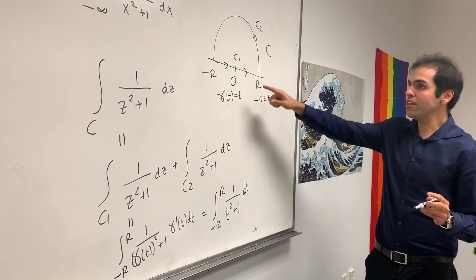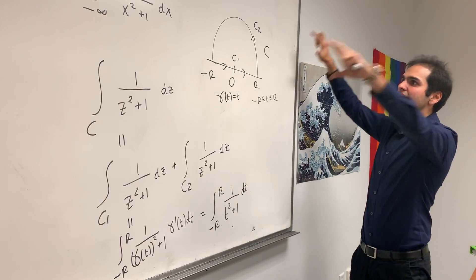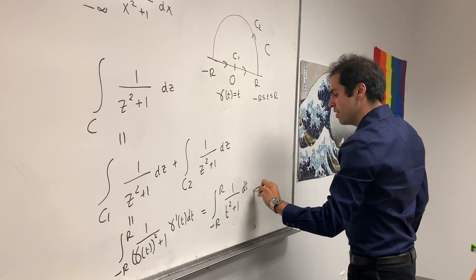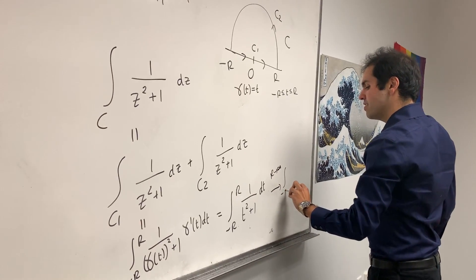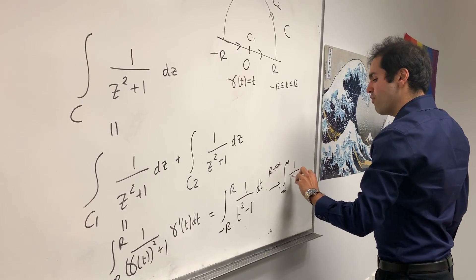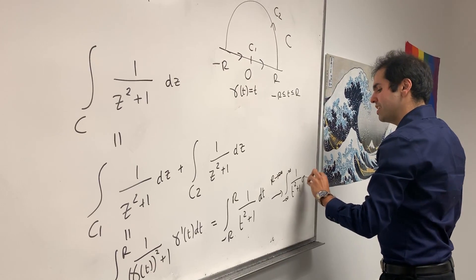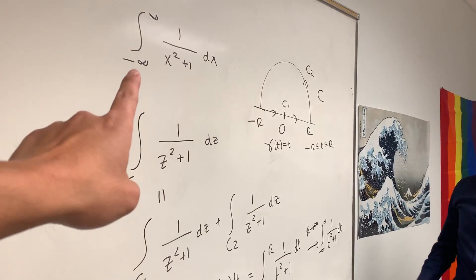And notice, as r goes to infinity, basically if you blow up this whole circle, you'll get that this is the integral from minus infinity to infinity of 1 over t squared plus 1 dt. And that's the same as the original.